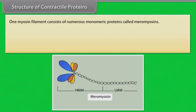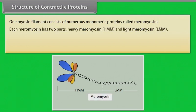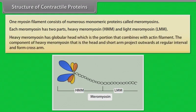One myosin filament consists of numerous monomeric proteins called meromyosins. Each meromyosin has two parts: heavy meromyosin (HMM) and light meromyosin (LMM). Heavy meromyosin has a globular head, which is the portion that combines with the actin filament. The component of heavy meromyosin — the head and short arm — projects outwards at regular intervals and forms cross bridges.